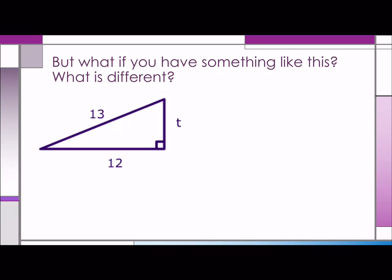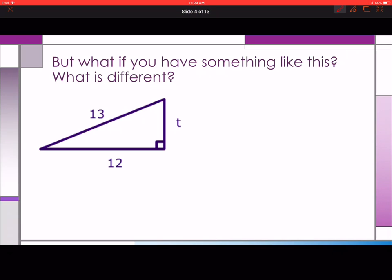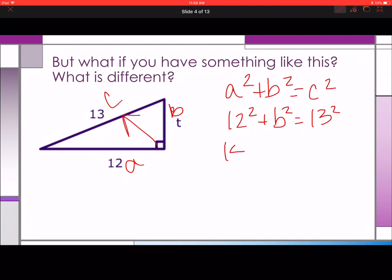Well, what's different about this? Nothing different. We're going to start by labeling the c. Now this is going to be our a or our b, and it doesn't matter which one. We're going to write our equation a squared plus b squared equals c squared. So our a in this example is 12 squared plus b squared equals 13 squared. That's 144 plus b squared equals 169.